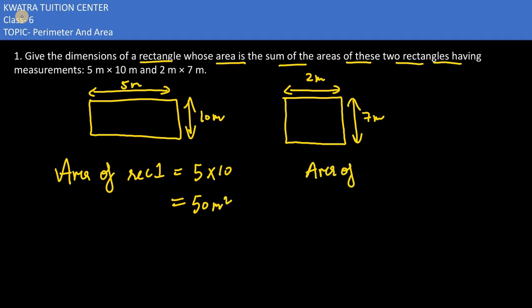Now find the area of the second one. Area of rectangle 2 would be there which is 2 into 7. It would give you 14 meter square.